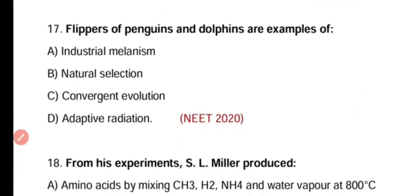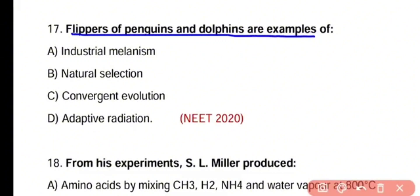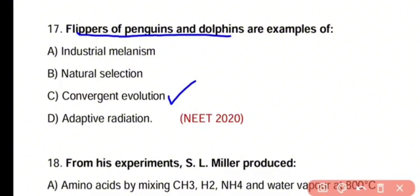Question number 17. Flippers of penguins and dolphins are examples of industrial melanism, natural selection, convergent evolution, or adaptive radiation. The correct answer is option C. Flippers of penguins and dolphins are structurally different but show similarity in function, so they are an example of convergent evolution.